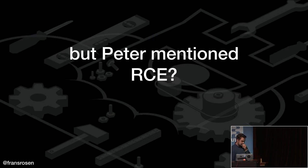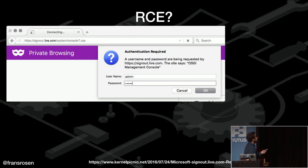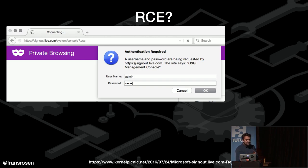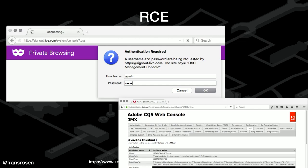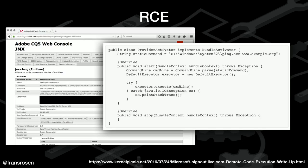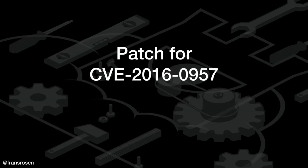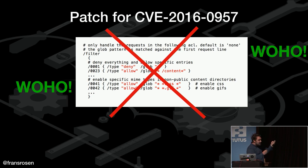Peter mentioned RCE in his blog post. The RCE was basically by accessing an endpoint called /system/console. When you go to that one, you get a password prompt. What Peter did — smart move — was try some credentials. If you can reach this endpoint you can install code. Peter tried admin/admin and got it, because that's the default credentials. He reported this to Microsoft and Adobe, Adobe created the CVE, and also issued a patch — though you'd think they'd remove the filter entirely, right? No — they just modified it.